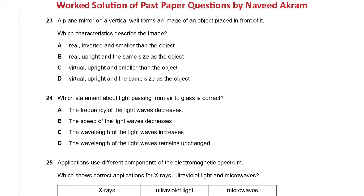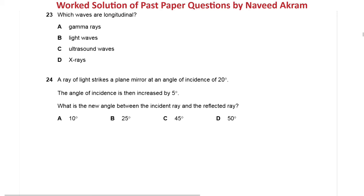Option A says real and inverted — no, the image is behind the mirror, it is a virtual image that cannot be captured on a screen, so options A and B which state 'real' are eliminated. Option C says virtual, upright and smaller than the object — but it is not smaller; from daily experience you see yourself in the mirror at the same size. Option D — virtual, upright and the same size as the object — is the right answer.